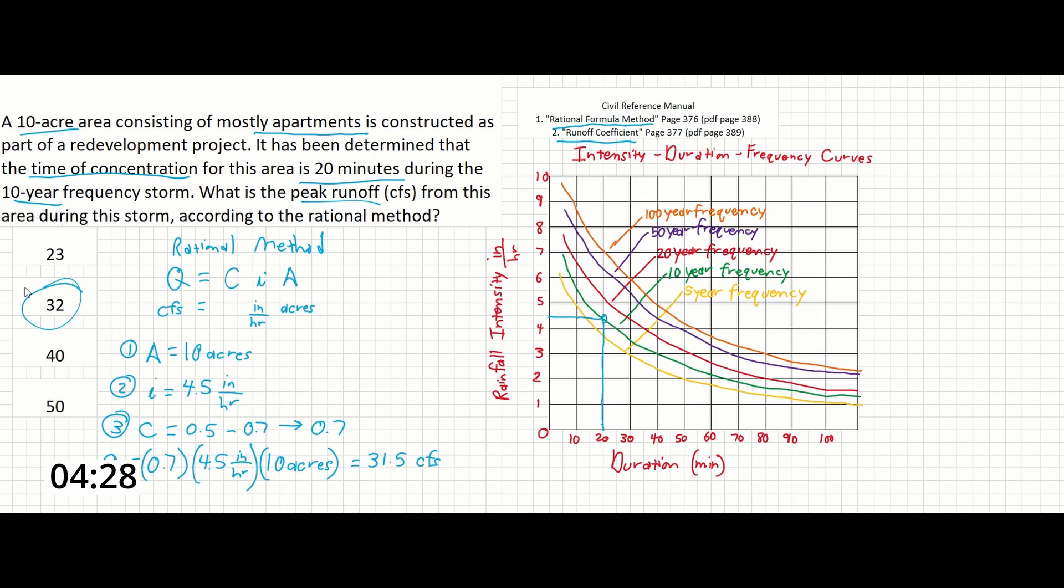So the only things you have to pay attention to in this problem are the size of the area, what information is given to help you find the right runoff coefficient, and understanding where to find your equations for rational method and your information on your runoff coefficients.